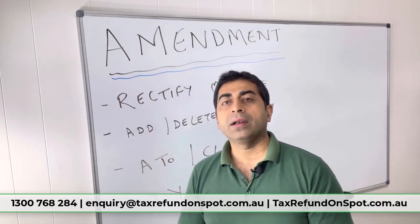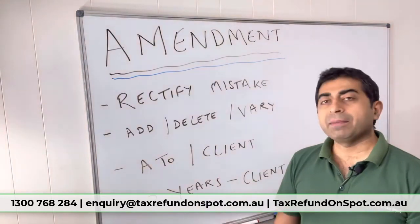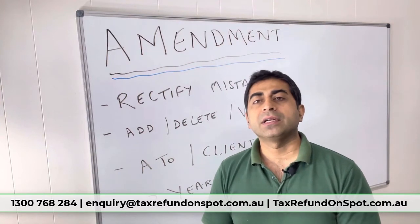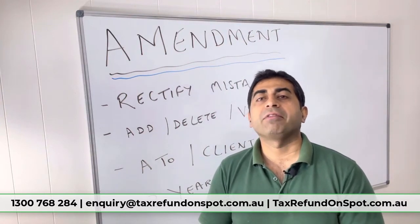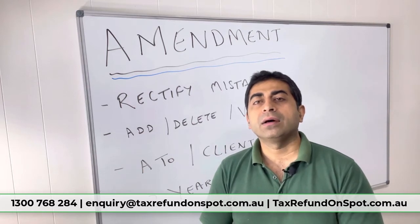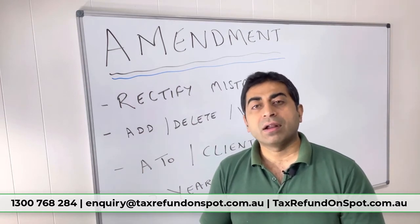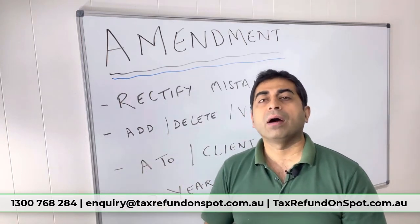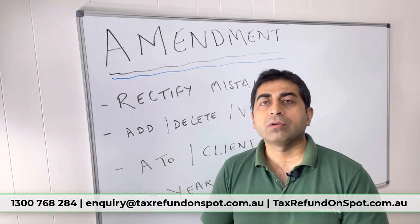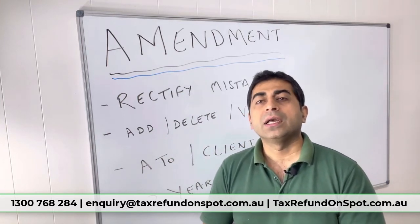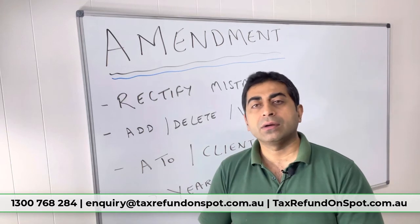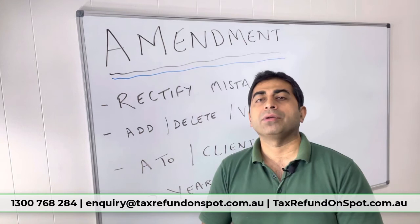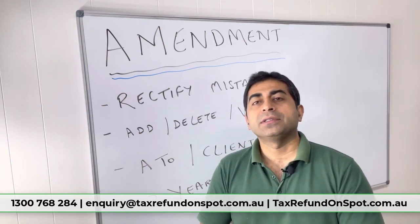The time limit for the client is two years — once you lodge a tax return, you get two years to rectify any error. After that, the procedure is called an objection, but we are sticking to amendment here. So if you have made a mistake, do not worry, just contact your tax agent and they can lodge an amendment for you.